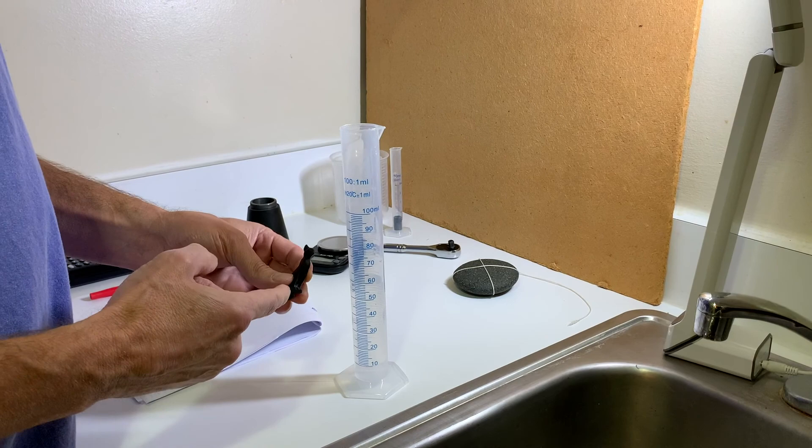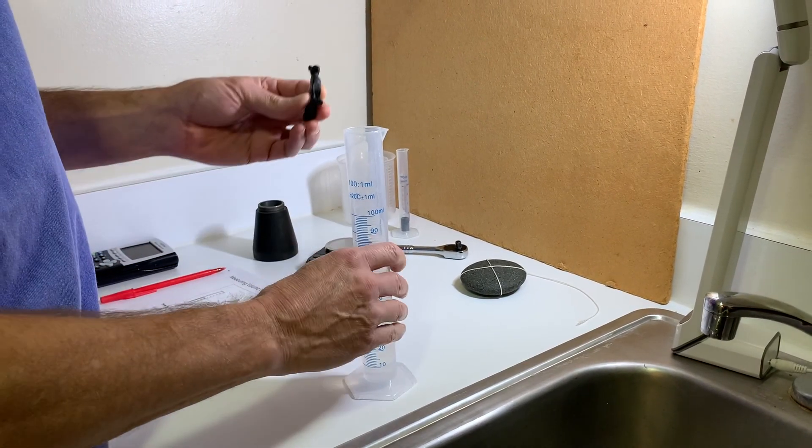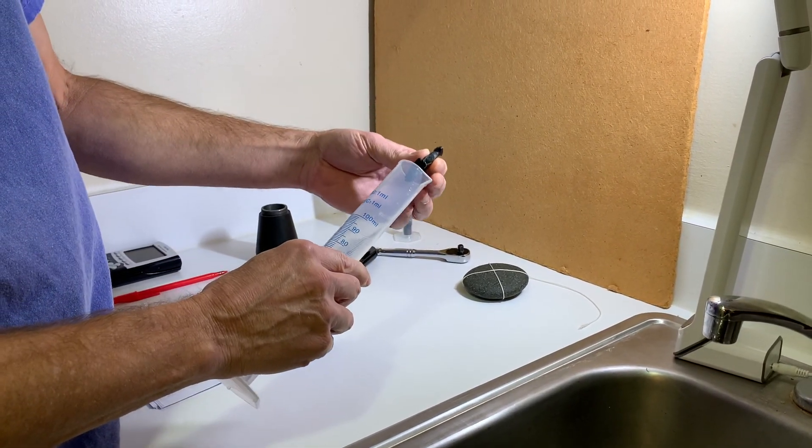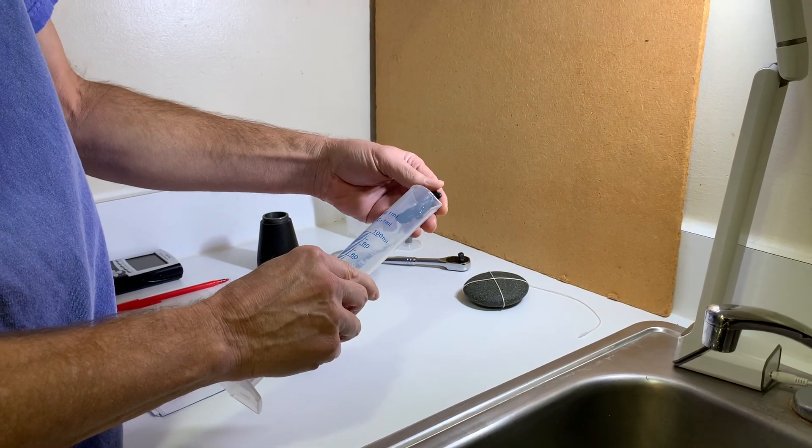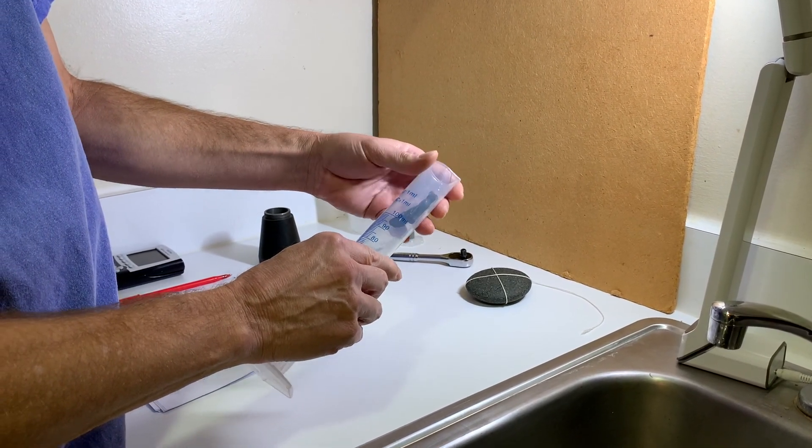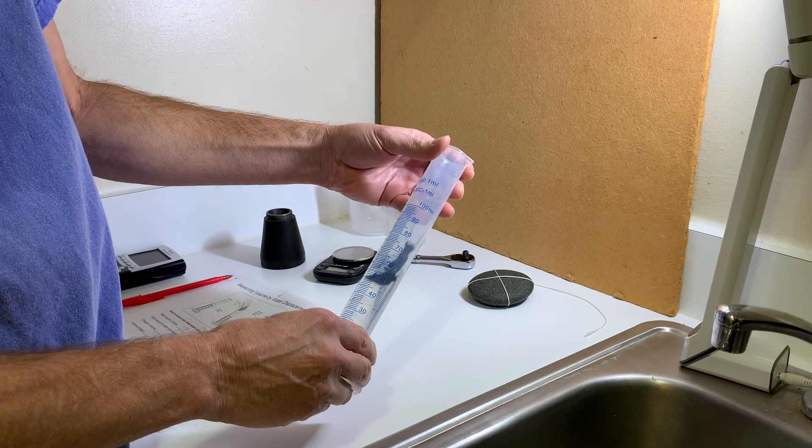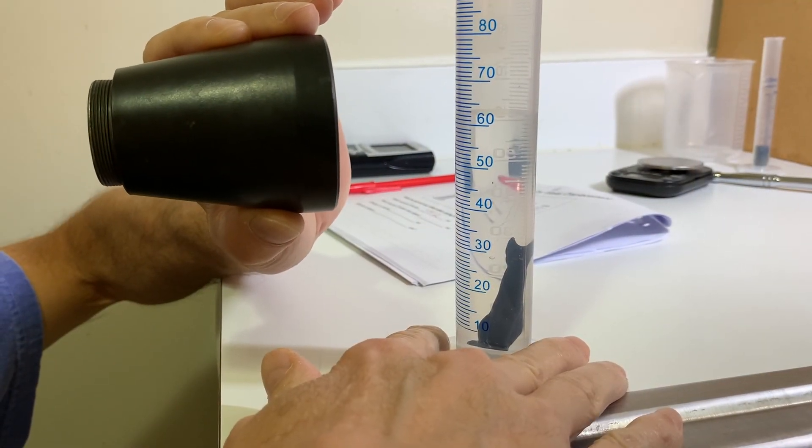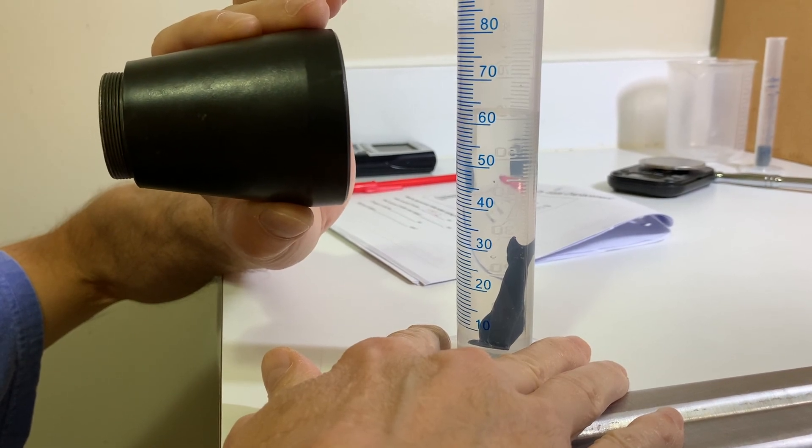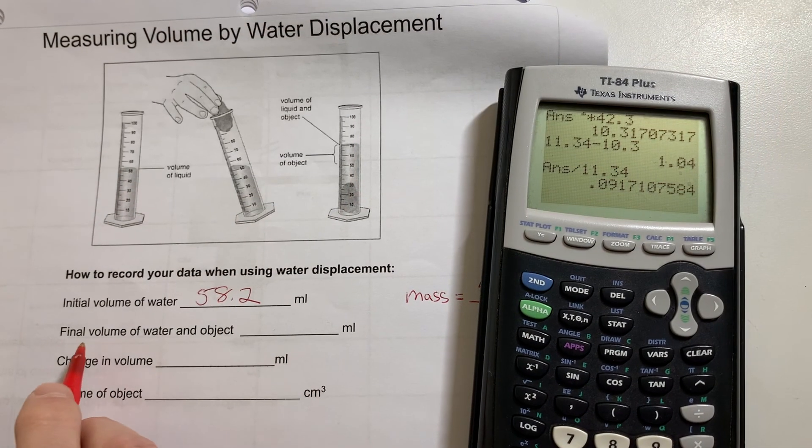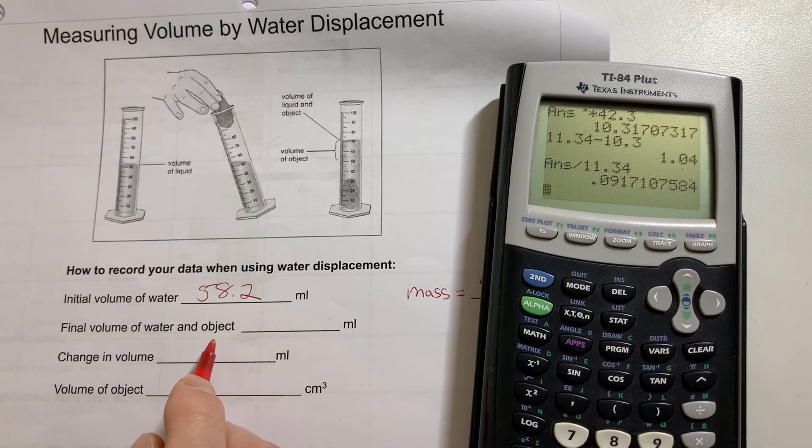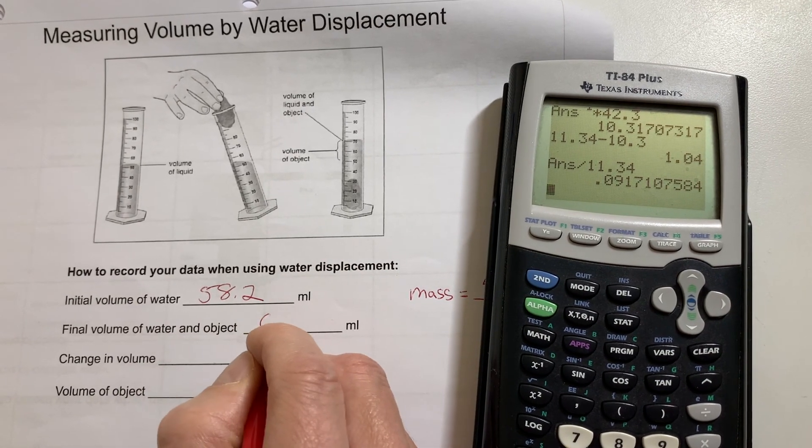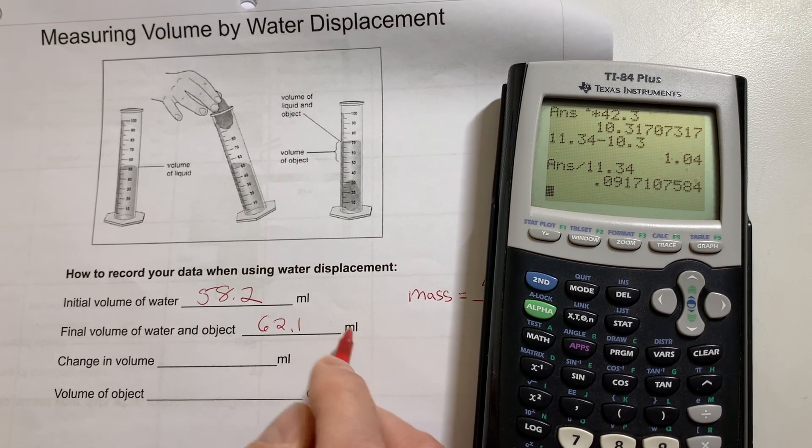So now I got to put her in there really carefully so I don't spill any water. Best way is to tilt it and let it slide in real gradually like that. And now I'm going to read the final water level, which appears to be about 62.1 milliliters. So the final volume of the water with the object in it was 62.1 milliliters.